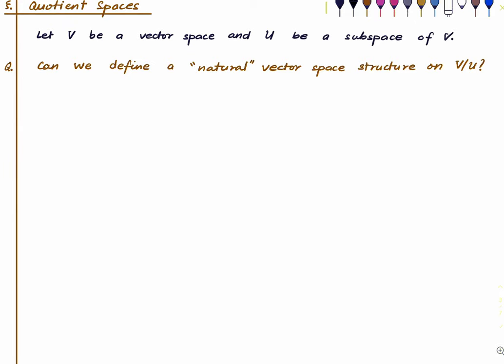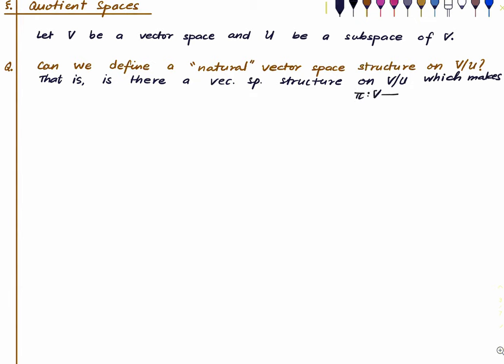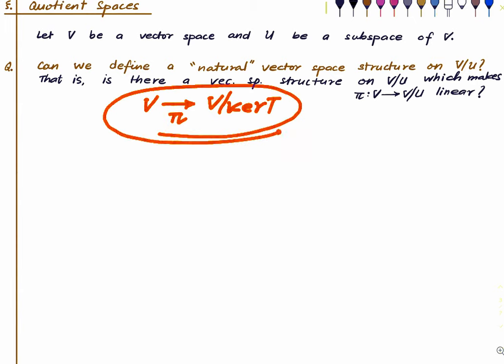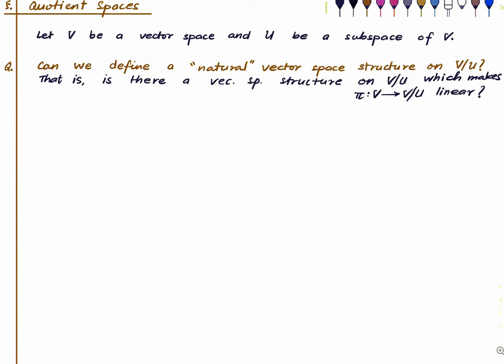The question we are asking is: can we define a natural vector space structure on the set of all the cosets of U? By natural, we mean: is there a vector space structure on V mod U which makes the natural projection map linear? We are asking that question in a context where there is no linear map — all we have is a vector space V and its subspace. Can we have a vector space structure here which makes this projection map linear?